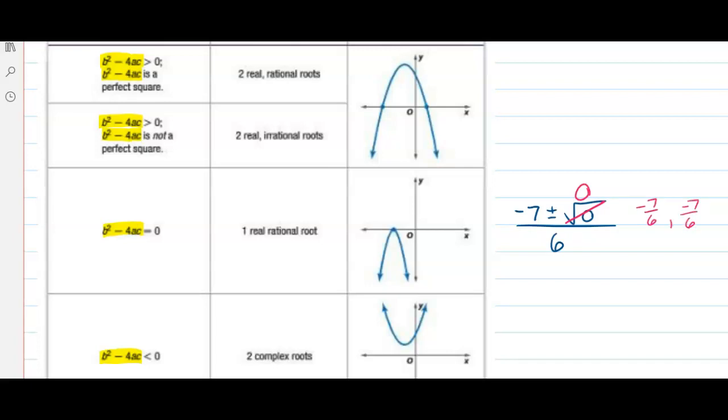We get the same double root. And that happens, as you know, when our graph just touches the x-axis. We're going to have one rational root.